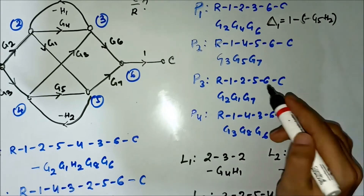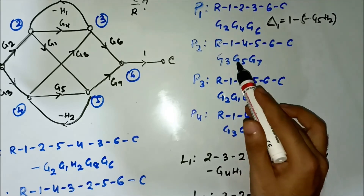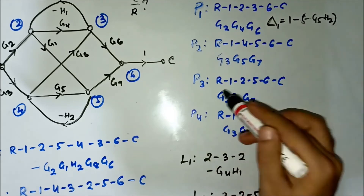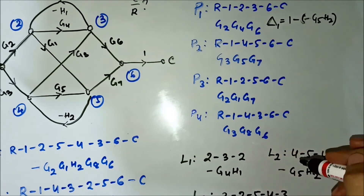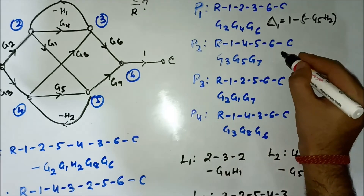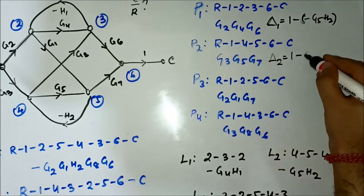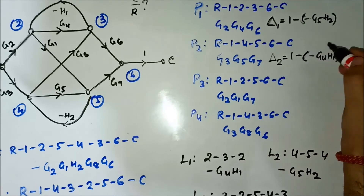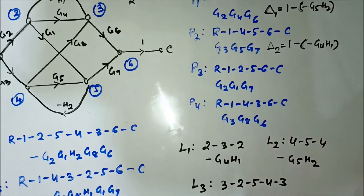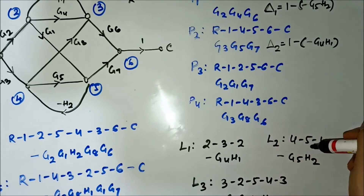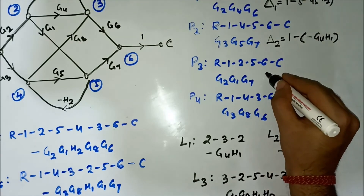For P2 (R, 1, 4, 5, 6, C): there is no common node with L1, so P2 does not touch L1. Node 4 and 5 are in L2, so P2 touches L2. Node 4 and 5 are also in L3, so P2 touches L3. Since P2 touches L2 and L3 but not L1, the path factor Δ2 = 1 − L1 = 1 − (−G4 × H1). For P3 (R, 1, 2, 5, 6, C): node 2 is in L1 so it touches L1; node 4 and 5 touch L2; and L3 is also touched. Since P3 touches all loops, its path factor Δ3 = 1.